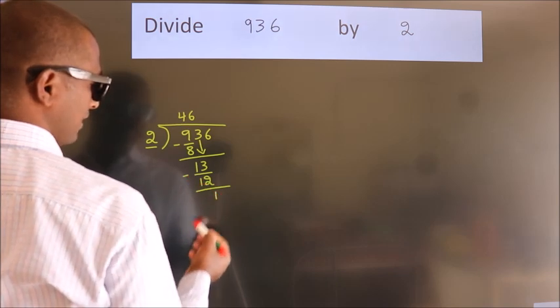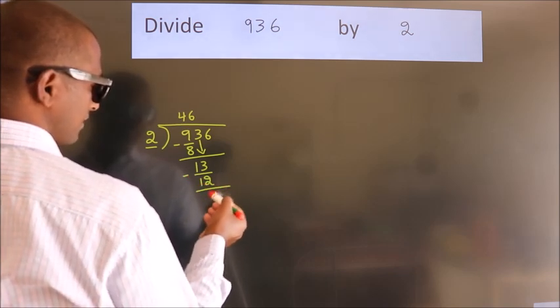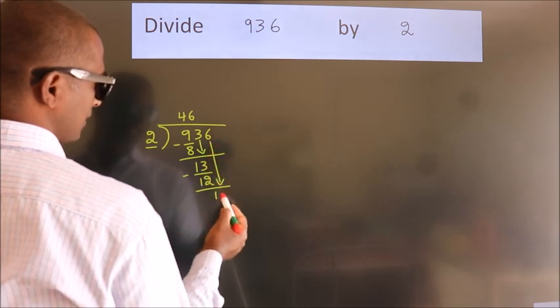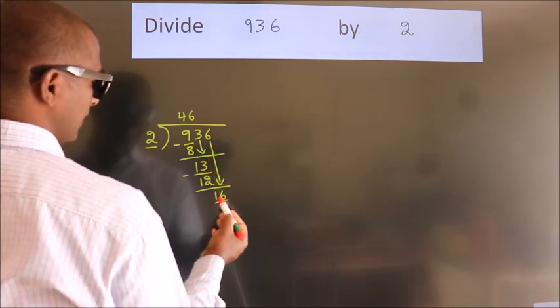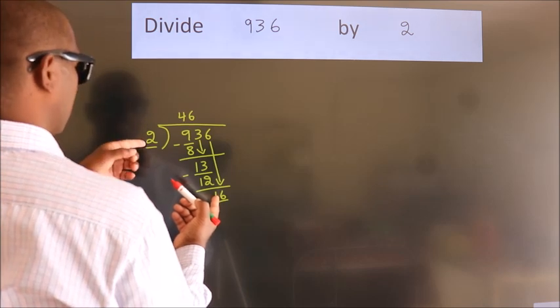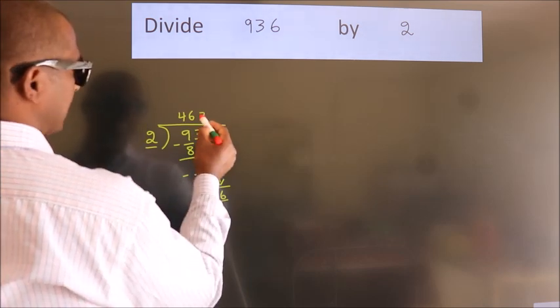After this, bring down the beside number. So 6 down. So 16. When do we get 16 in the 2 table? 2 times 8 equals 16.